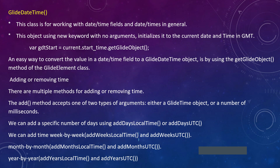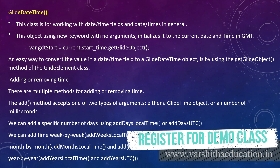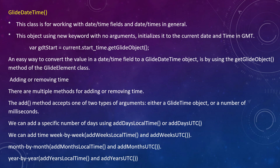This object is used with the new keyword. Using new GlideDateTime with no arguments initializes it to the current date and time in GMT. For example, you can take a variable like current.start_time — this is a field value where current is a particular record ready to display at that time, and start_time is the starting field value.